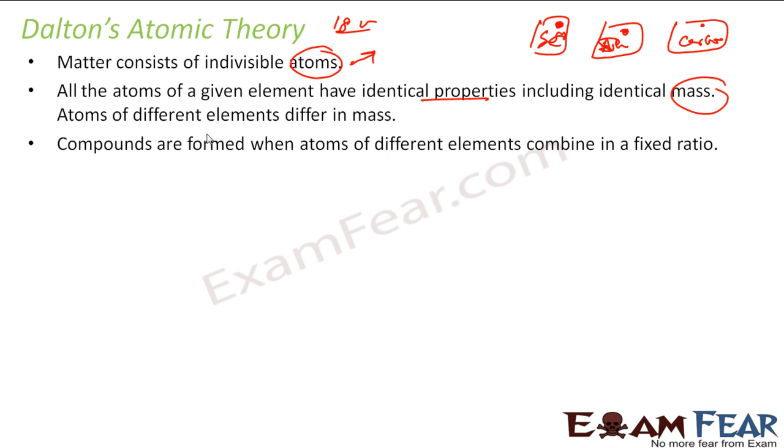Compounds are formed when two different atoms are combined in a fixed ratio. This is extension of law of definite proportion that says that in any compound the elements are in definite proportion. That is what he has told, that compounds are formed when two atoms are combined in a fixed ratio.